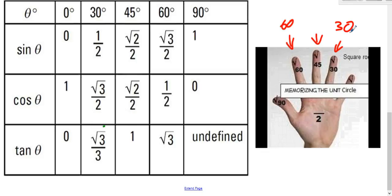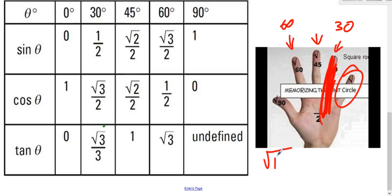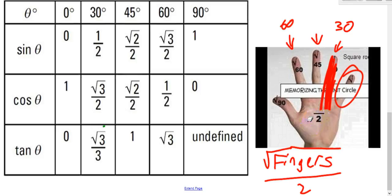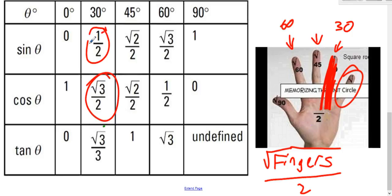For example, if you want sine and cosine for the 30-degree angle, you fold down the ring finger. You notice three fingers on one side of the folded finger and only one on the other. The rule is: it's the square root of however many fingers you see, over two. For the 30-degree angle with three fingers on the cosine side, that's square root of three over two. On the other side, there's one finger, so sine of 30 is square root of one over two, which equals one half.